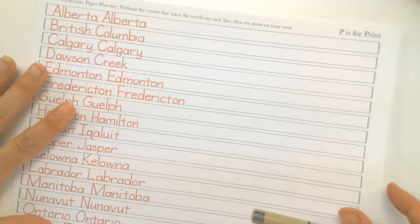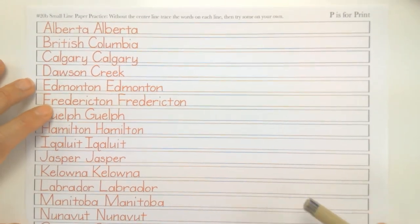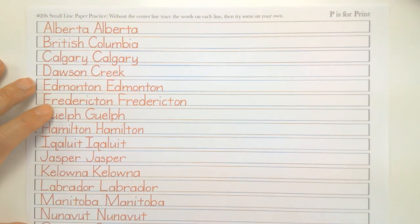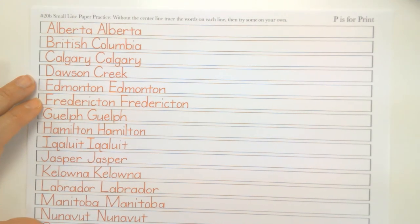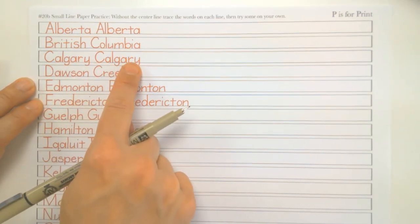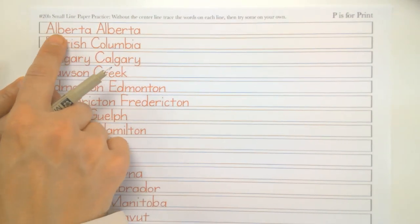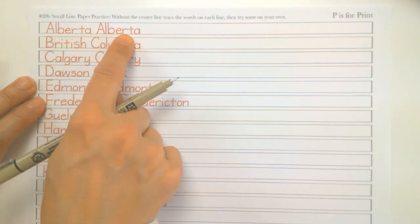Then I have the small. So we have provinces and towns in Canada. We just practiced the U.S. the last few lessons ago. Now we have Canada. And we're going to do Mexico too, to come on up. So we'll make sure we get all North America. Same thing. You can trace first and then try writing one on your own.